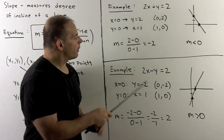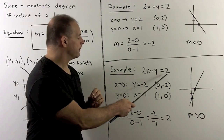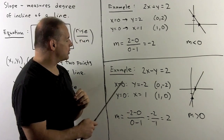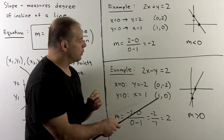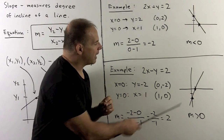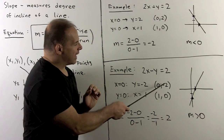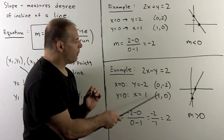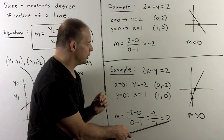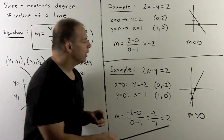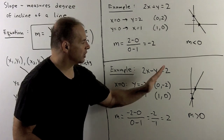For another example, take the line 2x minus y equals 2. Finding the intercepts gives the points (0, minus 2) and (1, 0). I plot these and compute the slope: minus 2 minus 0 over 0 minus 1, giving minus 2 over minus 1, which is 2. A slope of 2 is positive, and the inclination goes in that direction.